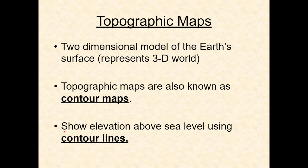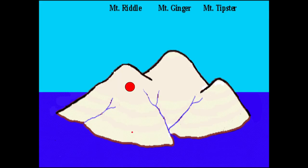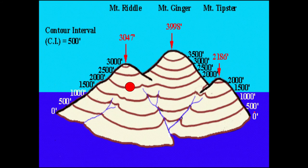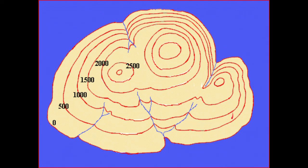The way topo maps work is there are contour lines, and they have values associated with them — elevations, basically the altitude above sea level. Here we have a small island with three peaks. I could draw lines at every 500-foot elevation: 500 feet, 1,000 feet, 1,500 feet, and so on. If I look at this from the top down, it would look like a topographic map with those contour lines visible.